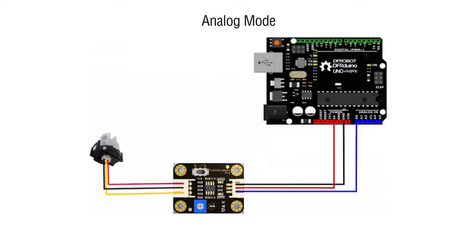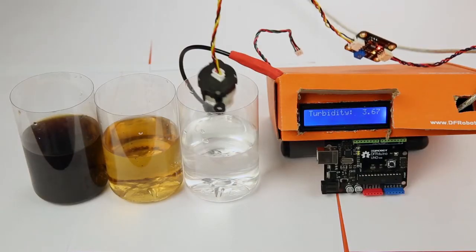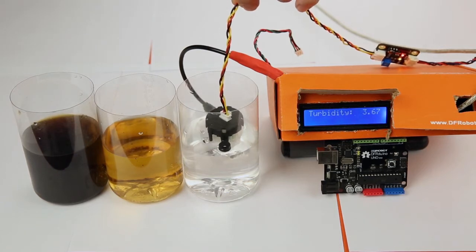Under analog mode, the signal wire off the A2D converter goes to the analog input pin on the microcontroller. The turbidity is represented by the voltage of the output pin.